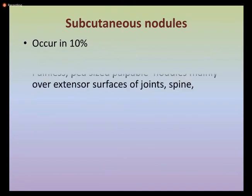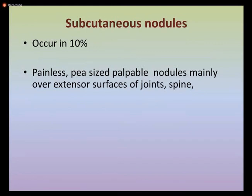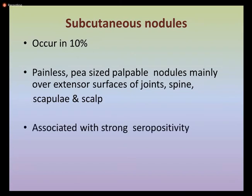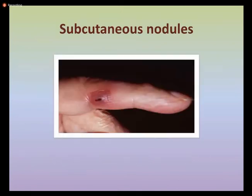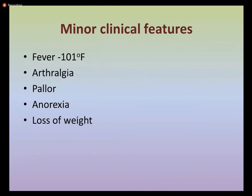Subcutaneous nodules occur in about 10 percent of cases, appearing as painless pea-sized palpable nodules mostly formed on the extensor surfaces of joints, spine, scapula, and scalp. Their presence is associated with strong seropositivity and severe carditis. Minor clinical features include fever of 101°F, arthralgia, pallor, anorexia, and loss of weight in chronic conditions.